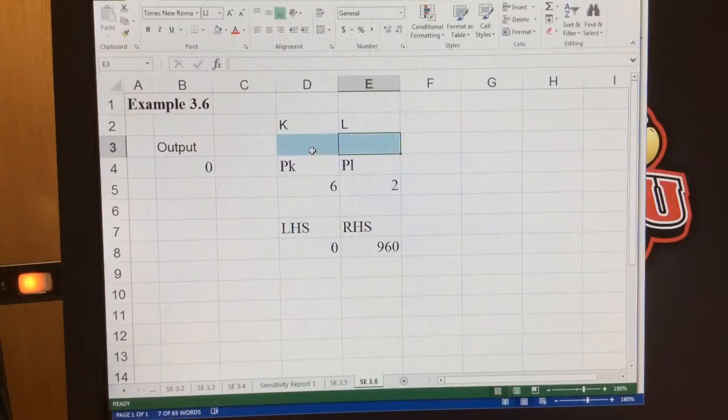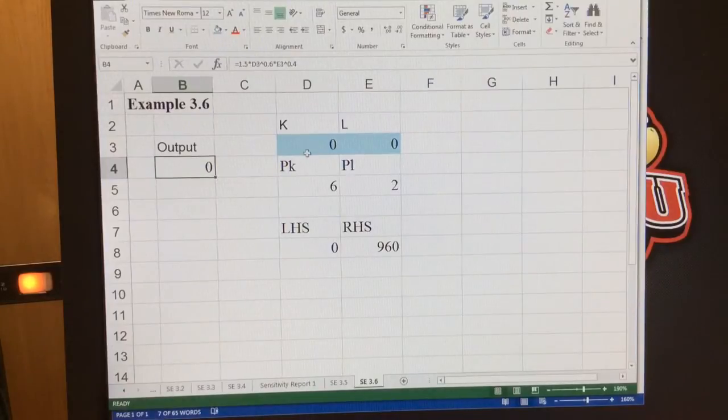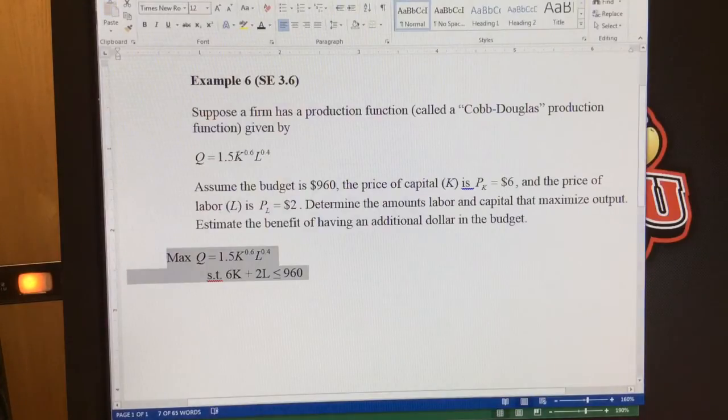So let's suppose one thing that's interesting is if I produce 0 and 0, because of this function, meaning that if K is 0, the whole thing is 0, I have to produce a little bit of capital or a little bit of labor for any output.